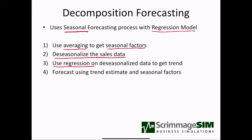Then we can use regression on this de-seasonalized data to get the trend line — the mx + b with regression. Then we can forecast using the trend estimate y = mx + b, and multiply by the seasonal factor for the particular period. So we're just going to use regression and multiply by the seasonal factors to adjust up or down, giving us a forecast that has both trend and seasonal components.